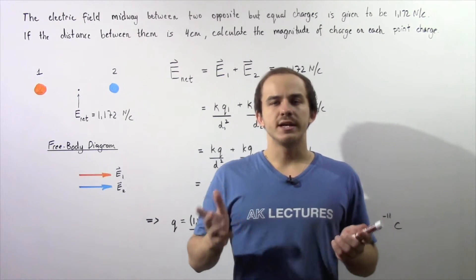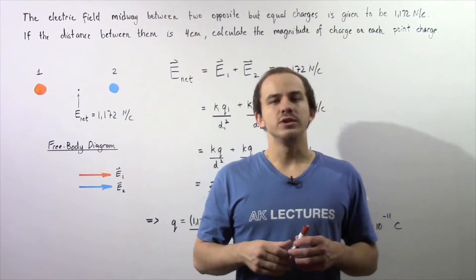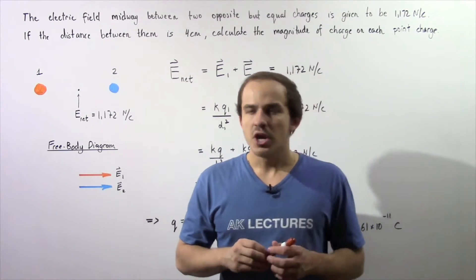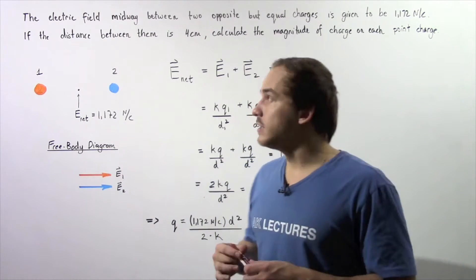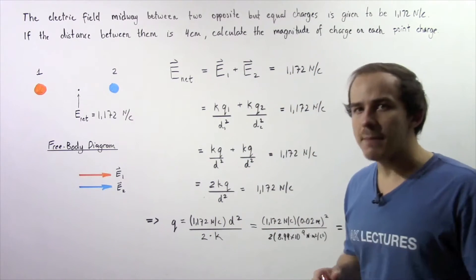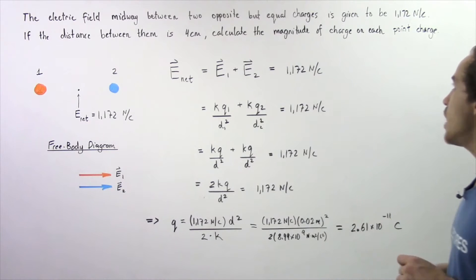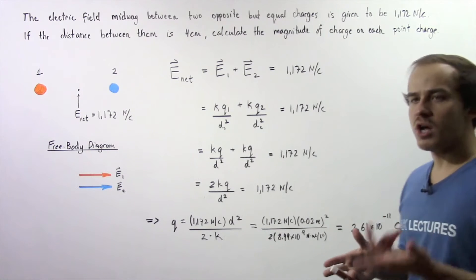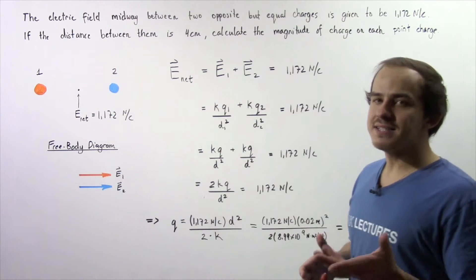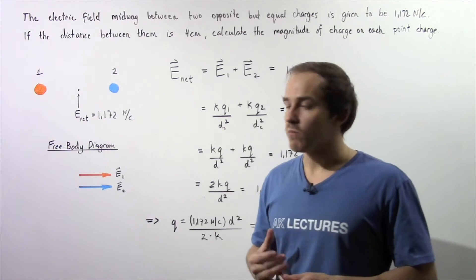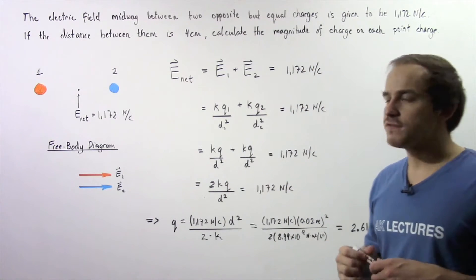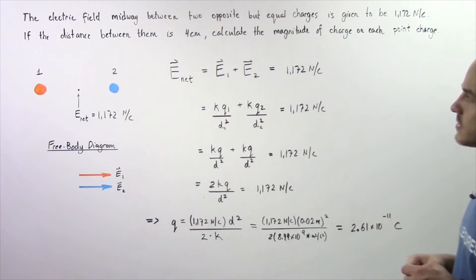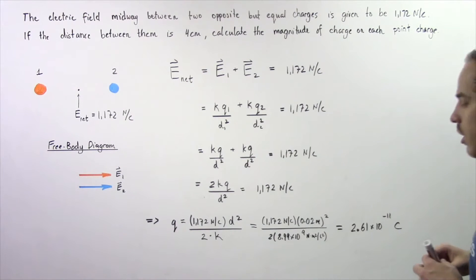Let's look at the following example dealing with electric fields. Suppose the net electric field midway between two opposite but equal charges is given to be 1172 N per Coulomb. If the distance between these two charges is 4 centimeters, calculate the magnitude of charge on each point charge.